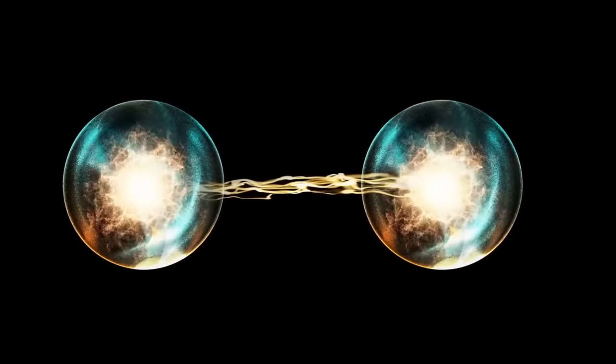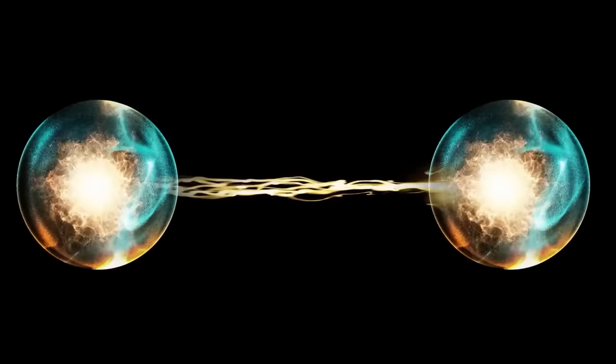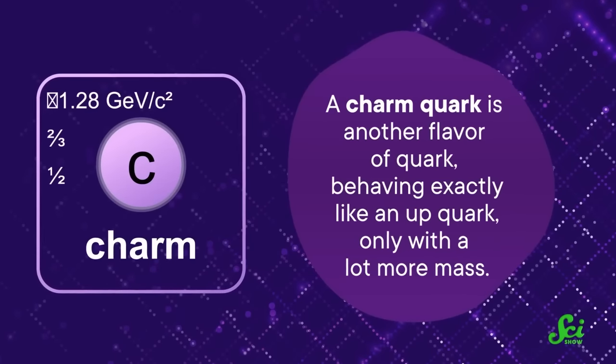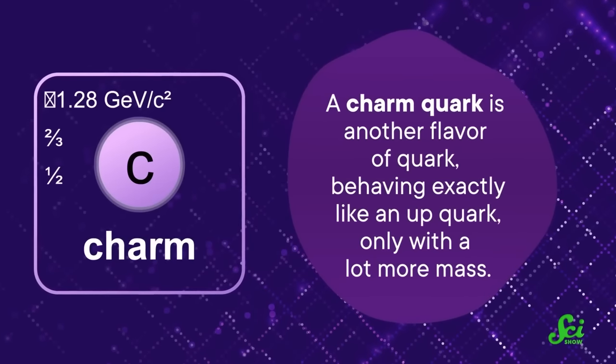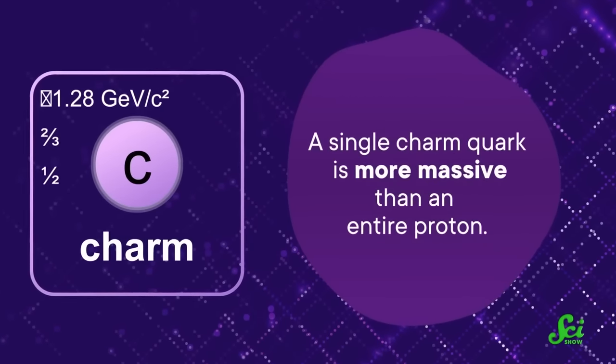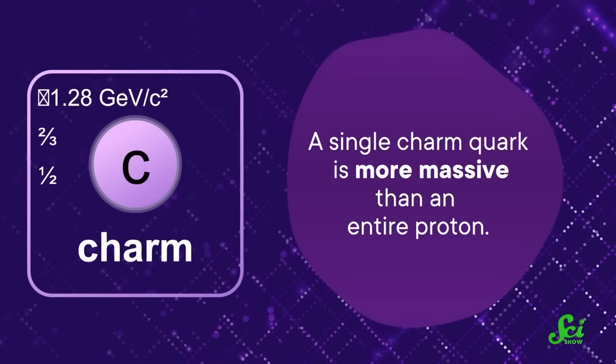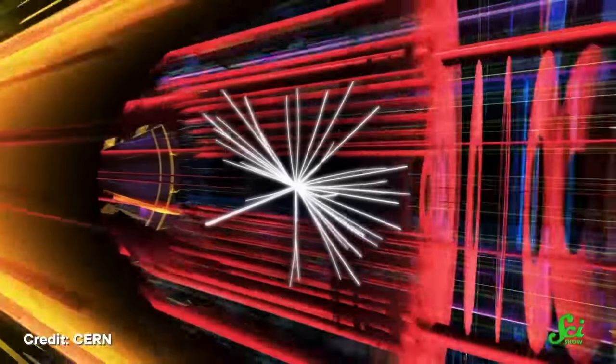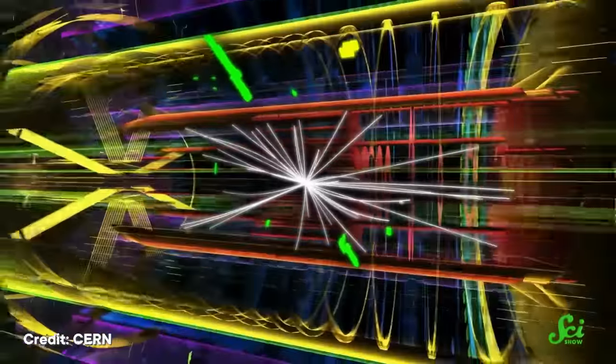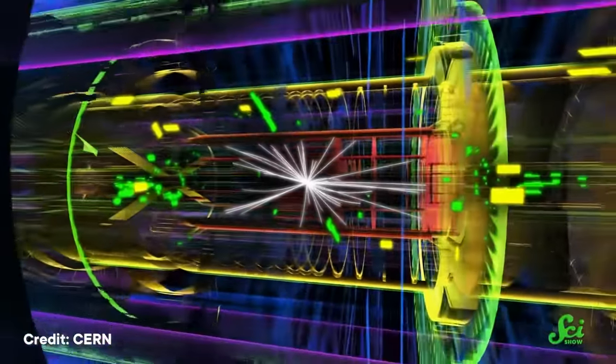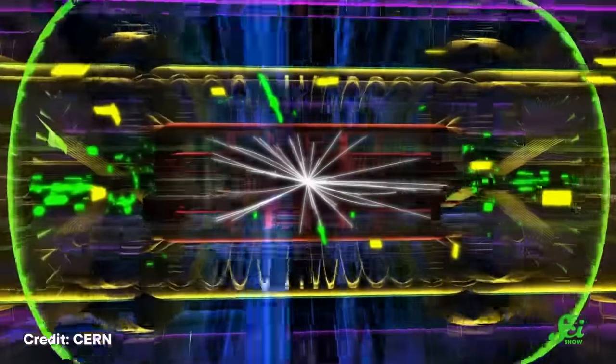The LHC-B experiments have also shed light on the unusual behavior of charm quarks. Charm quarks, which are heavier than up and down quarks, have been observed to switch between their mass and antimatter counterparts much faster than expected. This unexpected behavior is still not fully understood and could provide valuable insights into the imbalance between matter and antimatter in the universe.